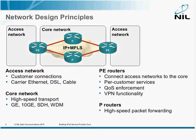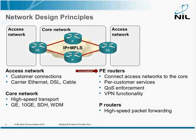Every large service provider network is usually split in two parts. The core network, where we are dealing with high-speed transport, usually implemented on some very high-speed technology, be it gigabit ethernet, 10 gig E, or high-speed WDM or SDH. And then we have the access network, where we have all the customer connections. They might be carrier ethernet, DSL, cable, or whatever else you have there. Between the access and the core networks, you usually have PE routers.